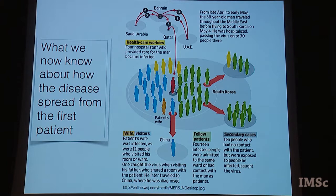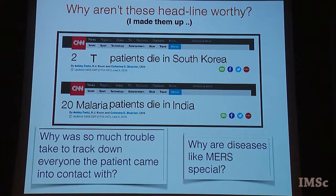The various other people he came in contact with — his fellow patients were 14 in number — themselves infected various secondary cases. So as you can see, we know a lot about what happened to this gentleman in the time just before he was diagnosed and past that. I made up two headlines: 'Two TB patients die in South Korea' and '20 malaria patients die in India.' These are not headlines you would see on CNN on the world news page. The question is why.